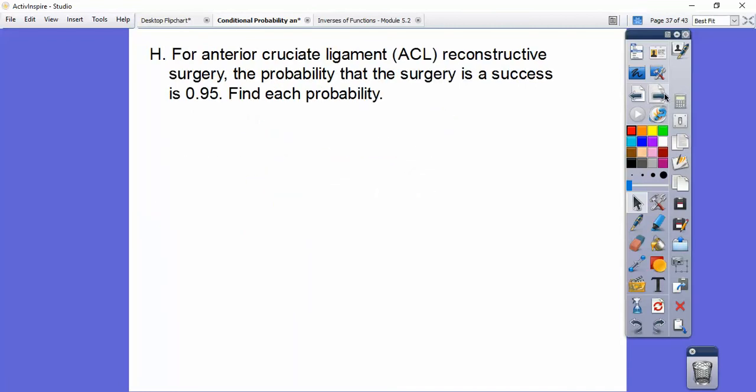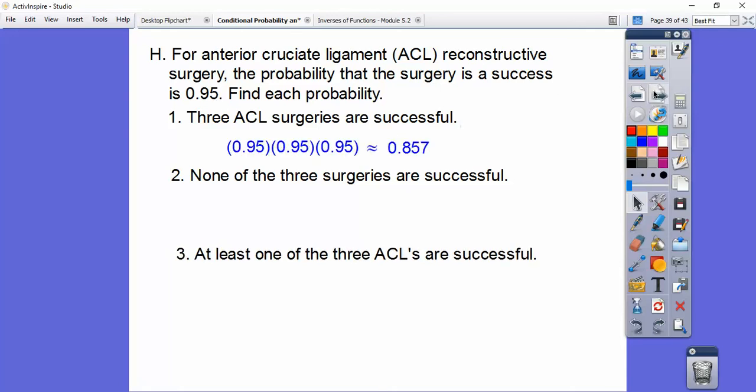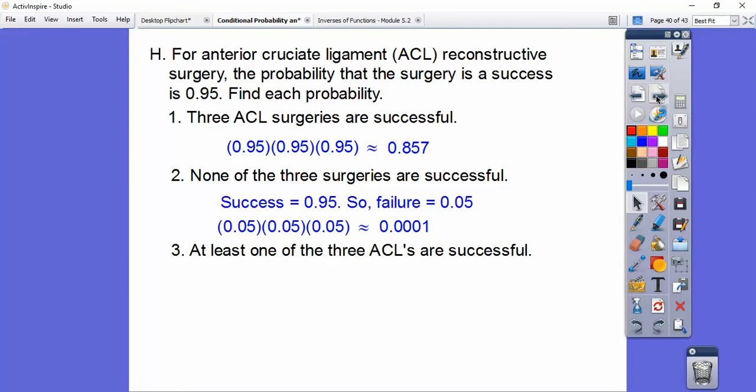For ACL reconstructive surgery, the probability that the surgery is success is .95. Find each probability. So three ACL surgeries are successful. Well, if each one is .95, then you multiply .95 three times. And you get about .8557. None of the three surgeries are successful. Well, if none of them are, and if you have a 95% chance that they are, then there's a 5% chance that they fail. So we multiply the failure rate three times, and we get about that.